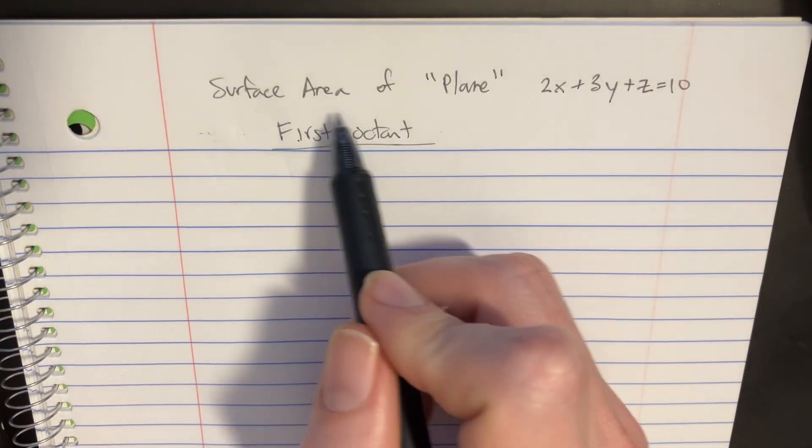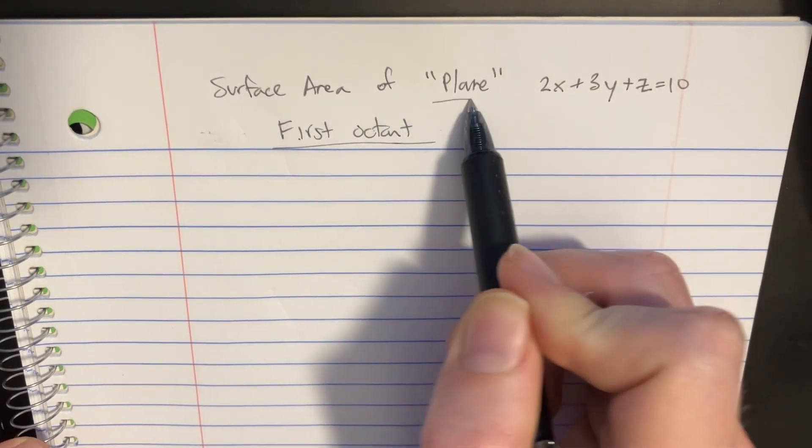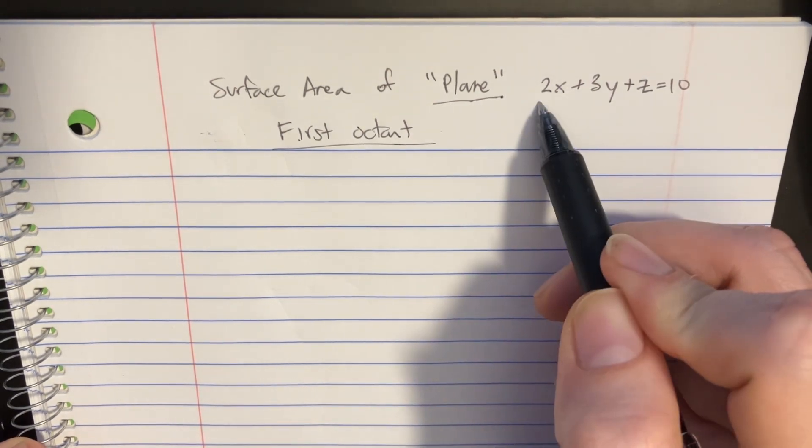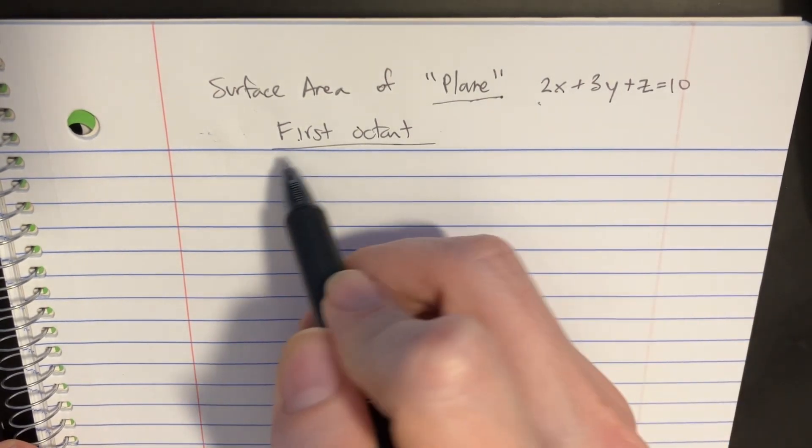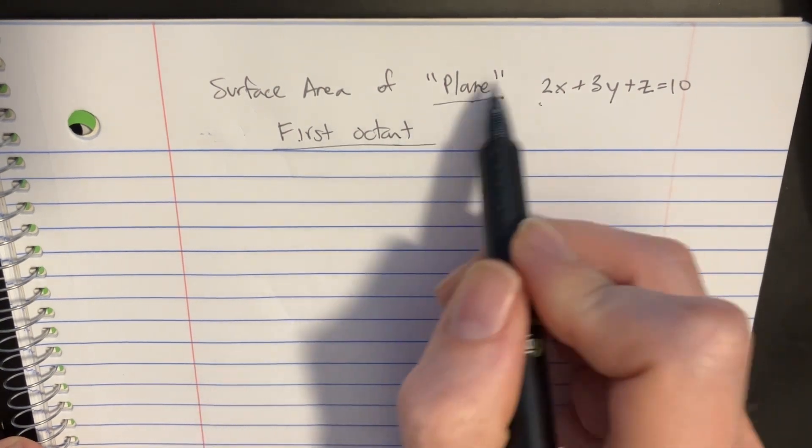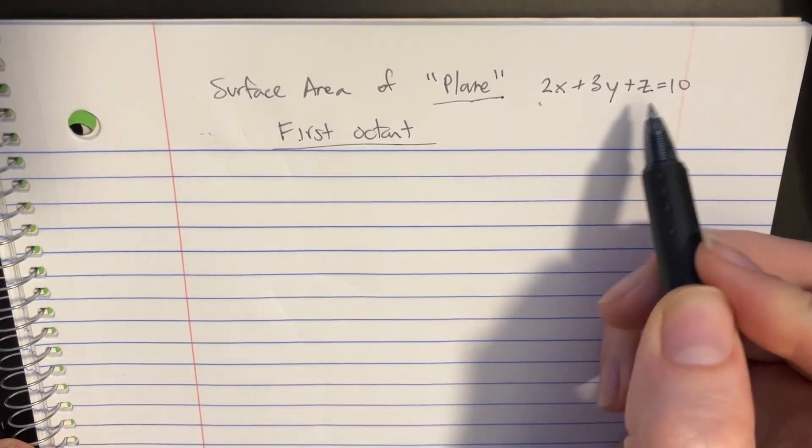We're looking for the surface area of a plane with the equation 2x + 3y + z equals 10, and it's in the first octant. So these are two very important pieces of information that we have to watch.